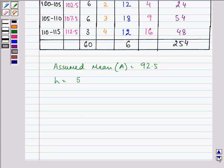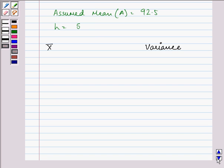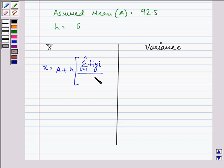So what we need to find out here, we need to find out the mean, the variance, and the standard deviation. So let us first find out the mean, and it is A plus H into summation Fi Yi upon summation Fi.